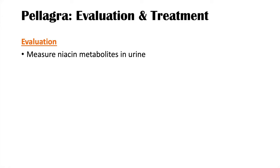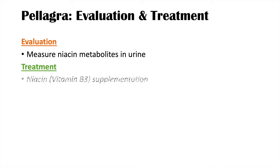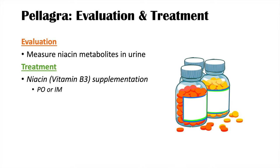Pellagra is evaluated by measuring niacin metabolites in the urine. If the urinary excretion rate is less than 5.8 micromoles per day, that indicates niacin deficiency. Treatment is straightforward: niacin supplementation, given by mouth or IM (intramuscular injection). Because these individuals may also be deficient in other B vitamins, a B complex vitamin supplement is often used as well.